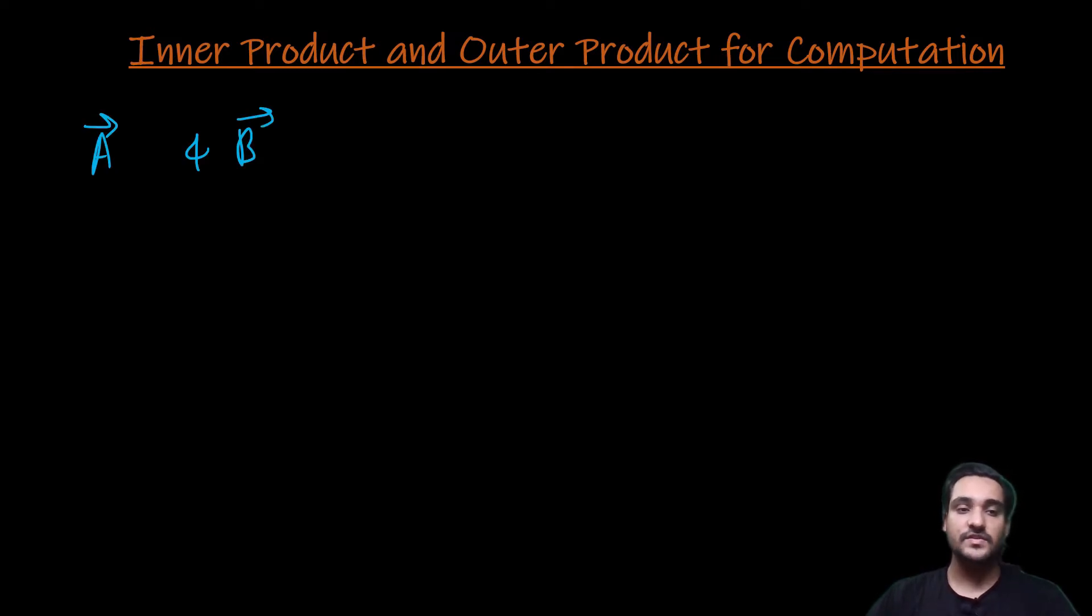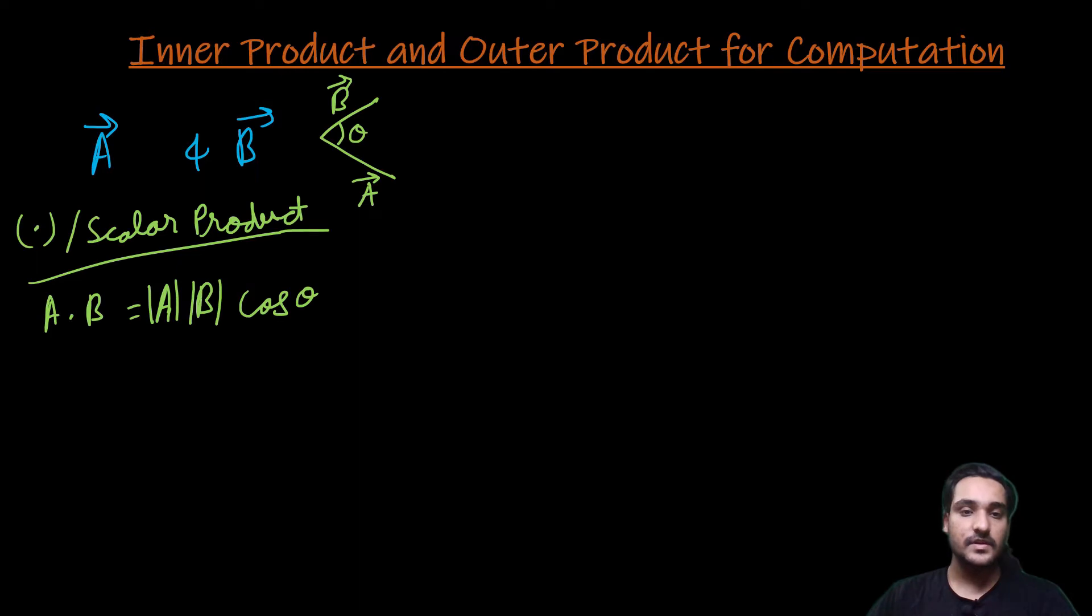For instance, we have two vectors, a vector A and a vector B, and they are having an angle of theta between them. Then what is a scalar product in our classical mathematics that we know?